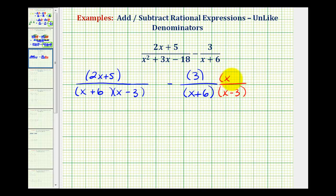And we can multiply the denominator by x minus 3 as long as we do the same to the numerator. Remember, anything over itself is equal to 1, so this is like multiplying by 1, producing an equivalent fraction, but now we have a common denominator.